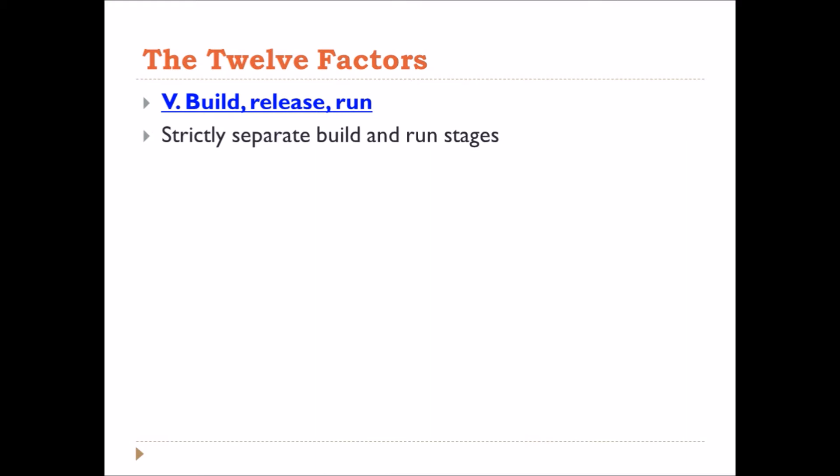The build stage is a transform which converts a code repo into an executable bundle known as a build. The release stage takes the build produced by the build stage and combines it with the deploy's current config. The run stage runs the app in the executable environment. We cannot change the code in this executable environment.